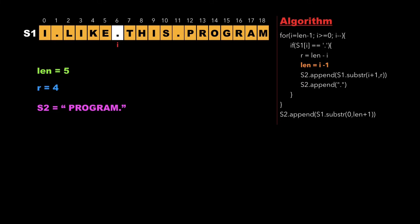We update length as i minus 1, which is 5, and append the substring from i plus 1 to r into s2. The updated s2 is now 'program.this', and we append a dot at the end.